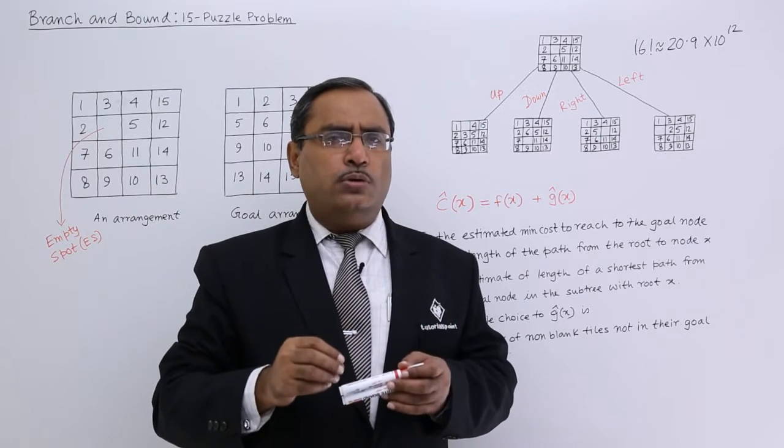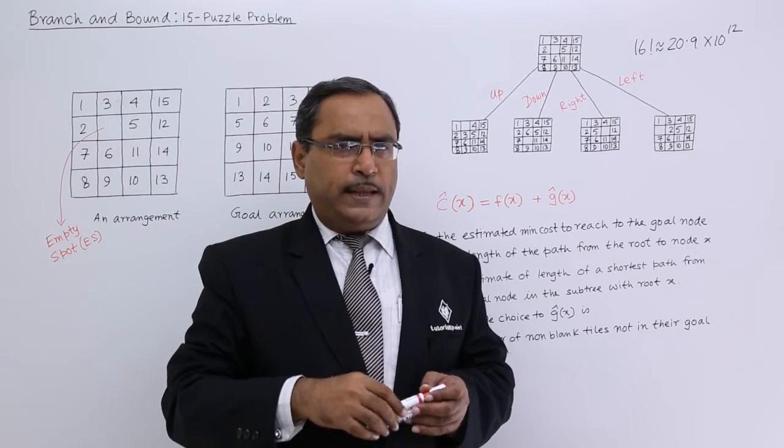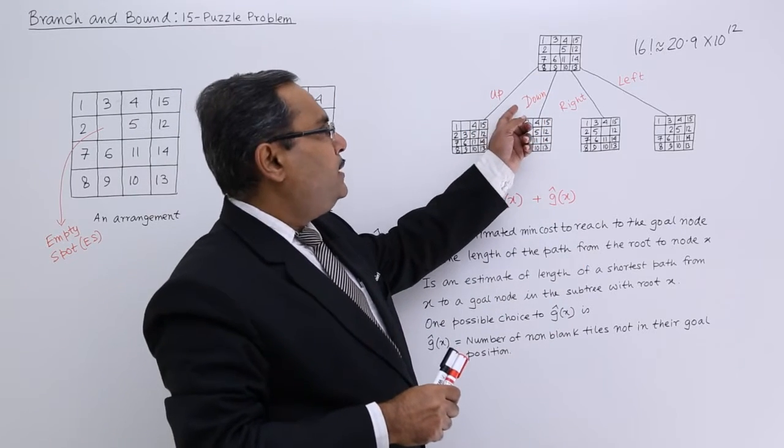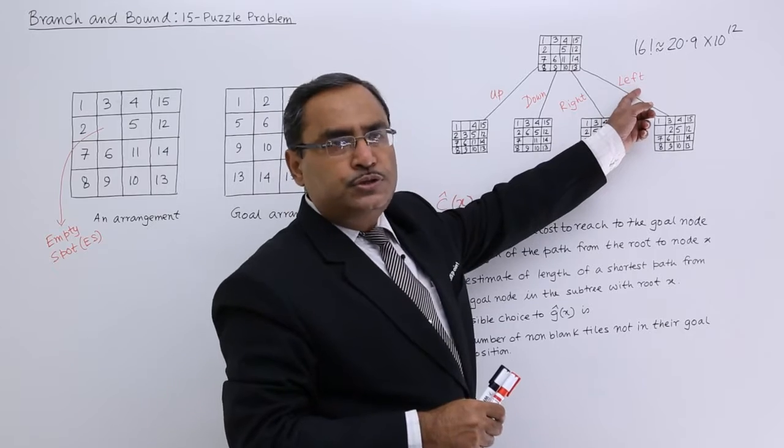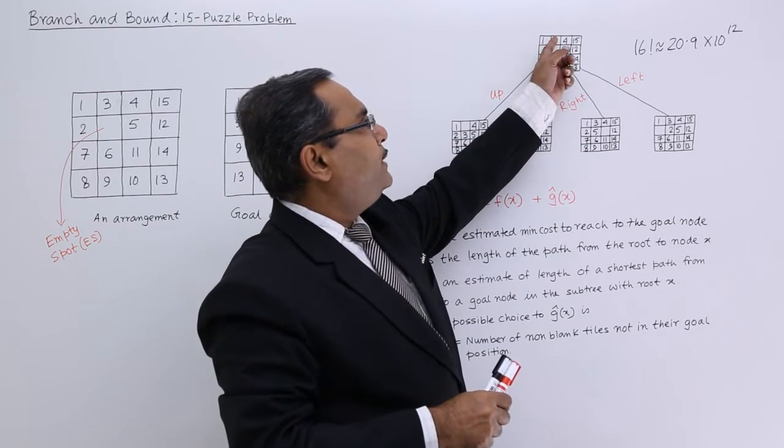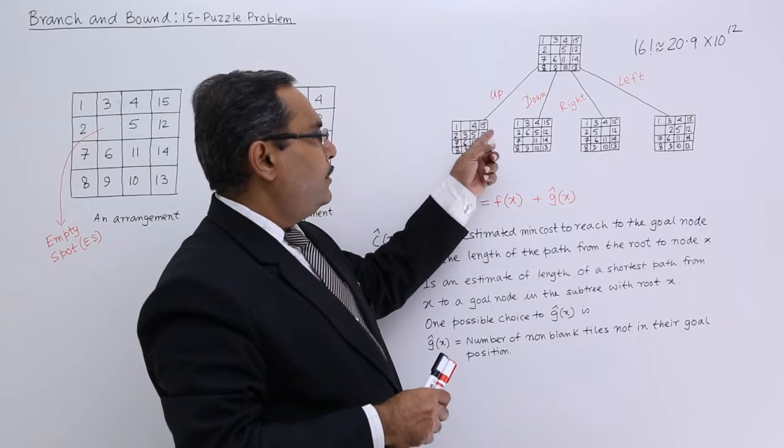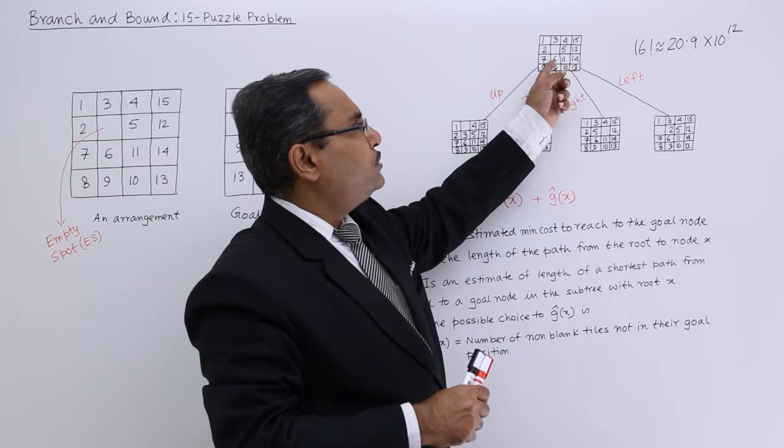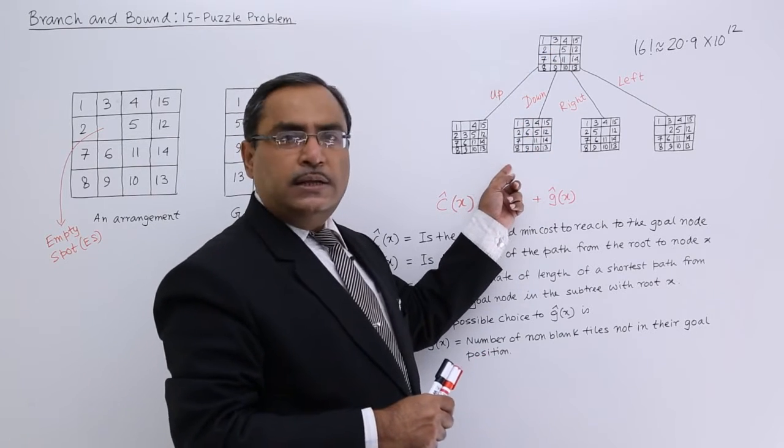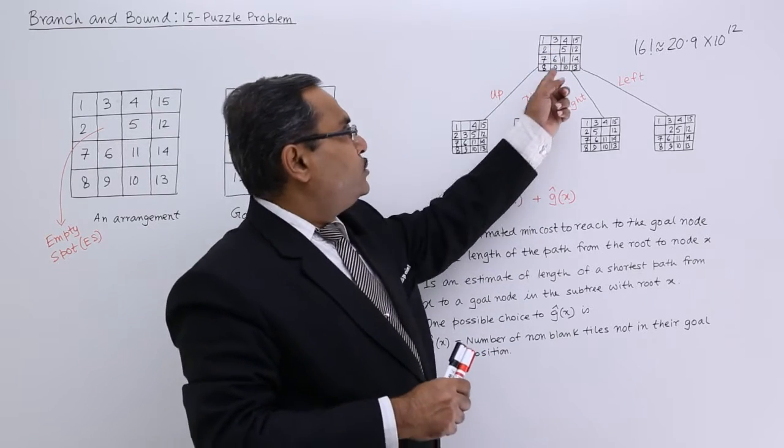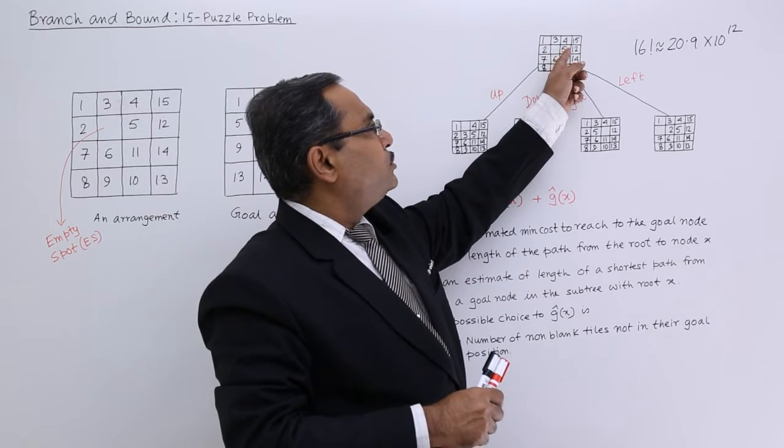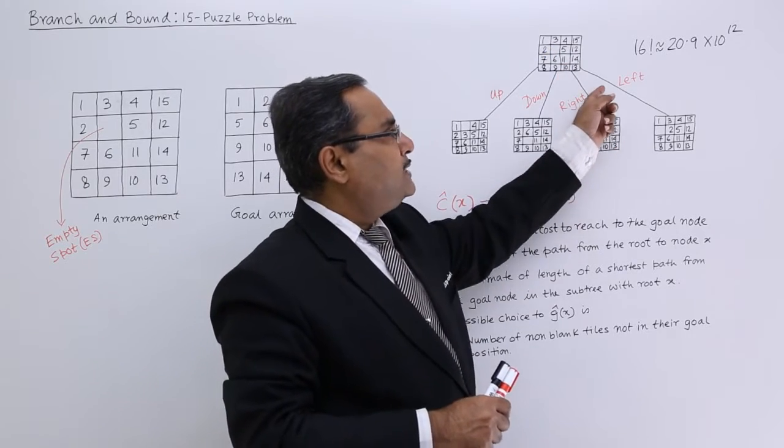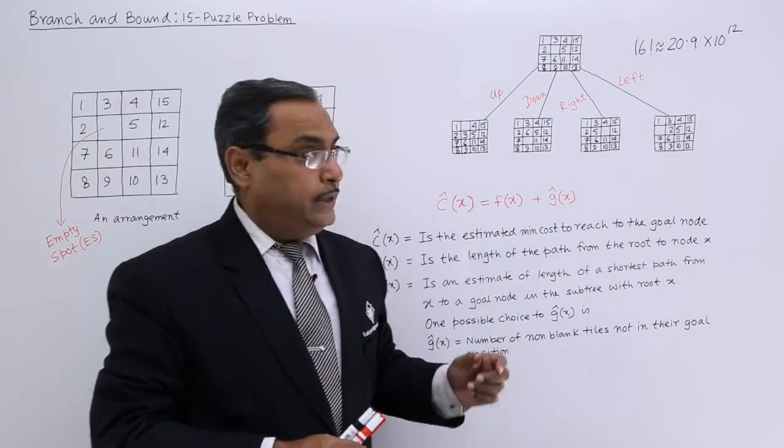Let us suppose this is our initial board position and here you can have up, down, right, left moves. Up move means the empty spot will go up so three will come down, rest tiles will have the same place. Down means the empty spot will go down so six will go up. Right means the empty spot will go to the right so five will come here at this particular place, and similarly for the left.